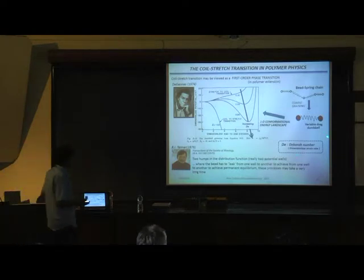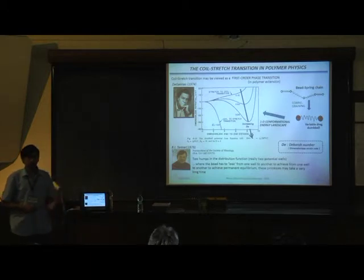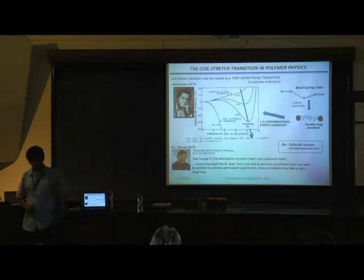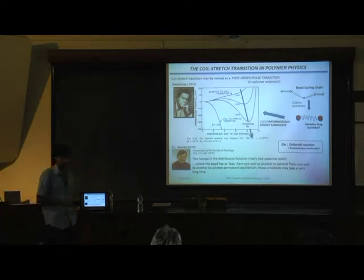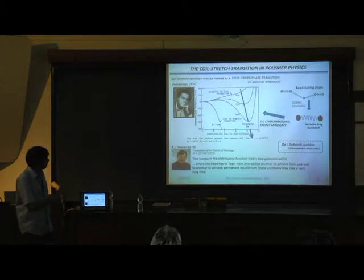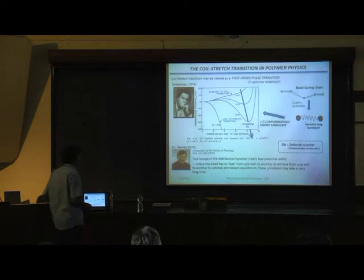This prediction of coil-stretch hysteresis stood for almost 30 years. It took Steve Chu's group to actually observe the hysteresis experimentally using lambda DNA at really large molecular weights, since the hysteresis exists because of the disparity in friction coefficients of coil and stretched polymers, which requires large molecular weights.